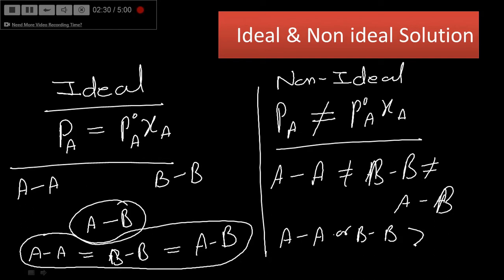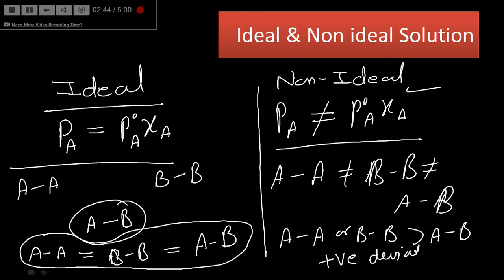If the interaction between A-A or B-B is greater than that of A-B, the solution shows more vapor pressure than expected by Raoult's law, and it is called a positive deviation. If the interaction between A-B is greater — meaning A-A or B-B is less than A-B — it is called a negative deviation.